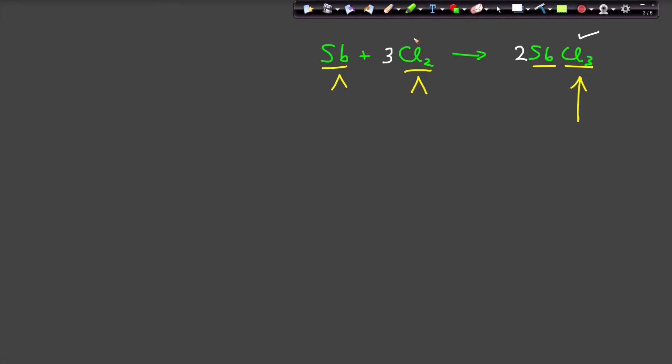And now we know that this chlorine is balanced. If we have a two coefficient, that means antimony is locked in at two, and so we merely put a two here. And now this equation is balanced. 2Sb, two antimony, plus three chlorine molecules, is equal to two antimony trichloride. And that equation is now balanced using cross multiply.